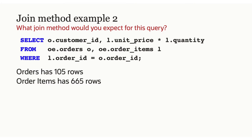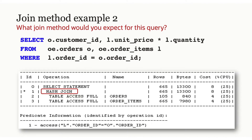What about joining orders to order items? We have an equality predicate, the tables are larger — 105 rows for orders and 665 rows for order items. It's a hash join. Why? We have an equality predicate, no indexes were mentioned, and so a hash join would be the most efficient way to process those two tables.